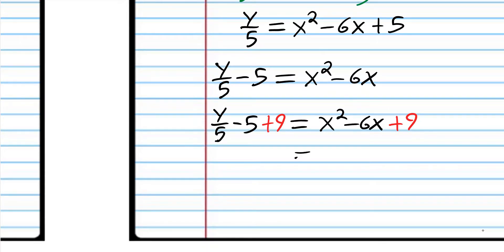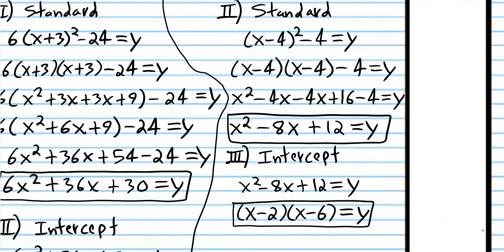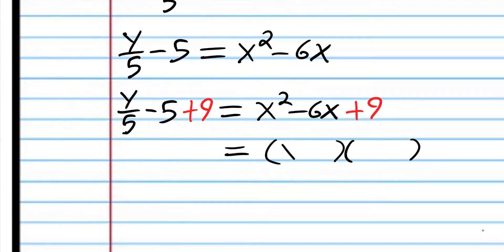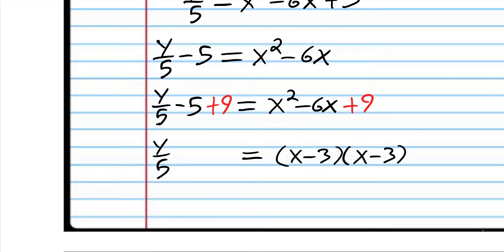Now we have a perfect square, so we're going to factor it — just like in previous problems where we had standard form and factored to intercept form. What two numbers multiply to 9 and add up to negative 6? That's negative 3 and negative 3. Negative 3 times negative 3 is positive 9, and negative 3 plus negative 3 is negative 6. Now we add negative 5 and 9 to get 4.